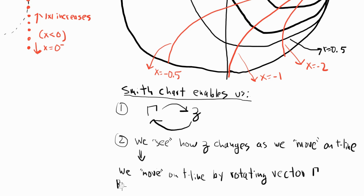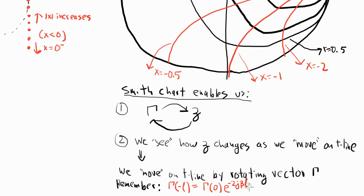Moving on the Smith chart means rotating the vector gamma, the reflection coefficient. Gamma at a distance l away from the load is defined by gamma of zero — the reflection coefficient at the load — multiplied by a phase equal to minus 2 times beta times l, a phase that varies linearly with l.